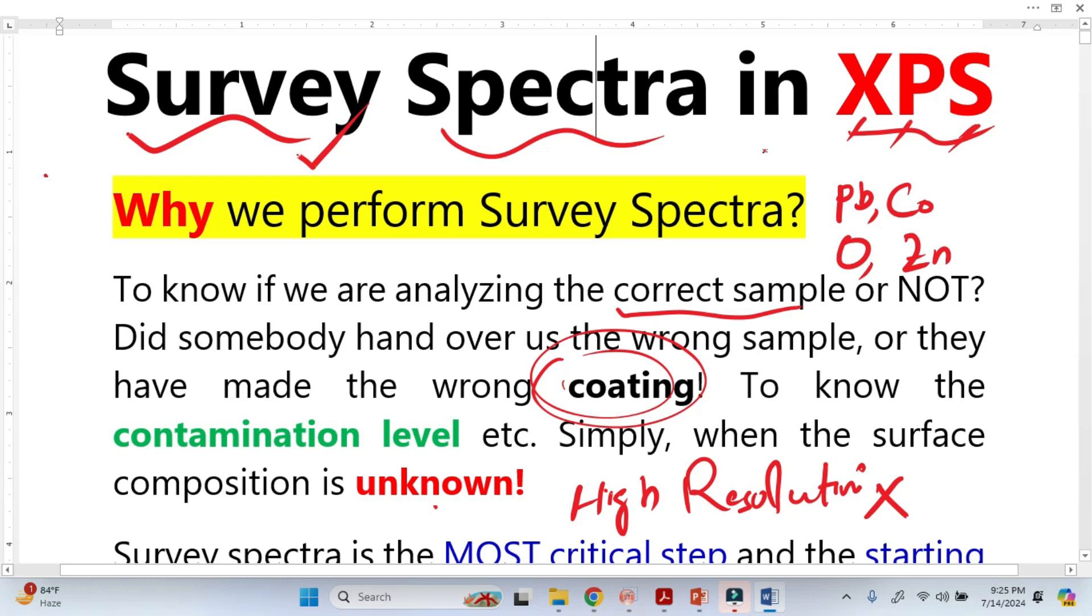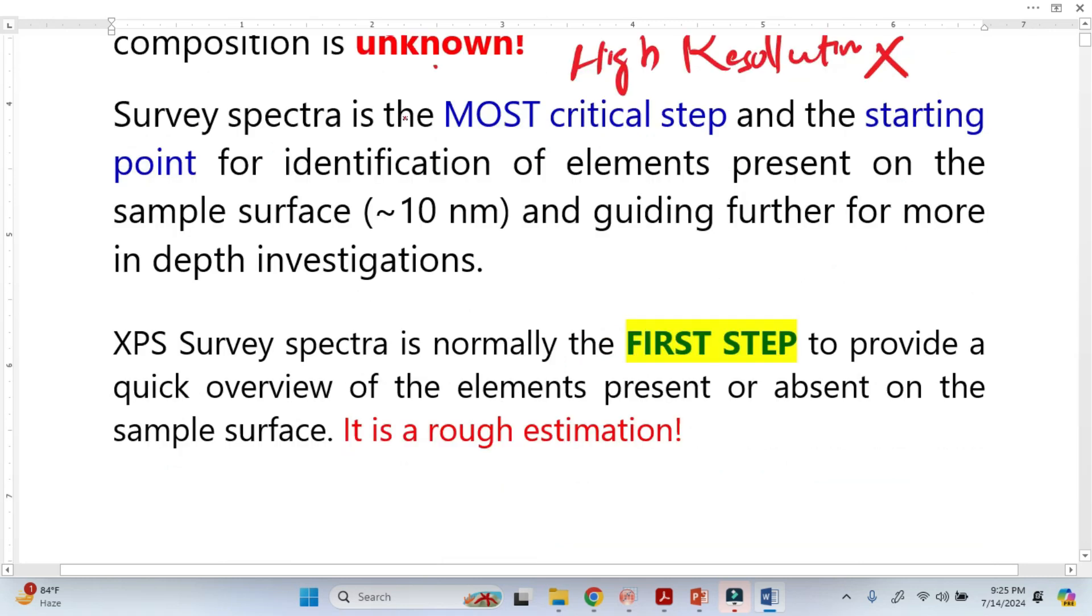Because XPS is a surface technique, it will detect a lot of things and what is the contamination level. So survey spectra is basically the most critical step and starting point for identification of elements.